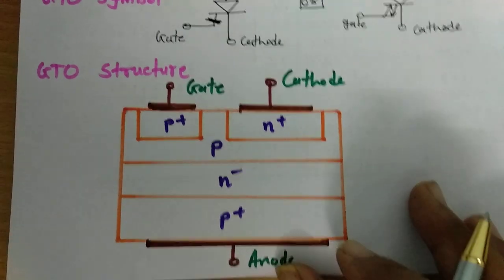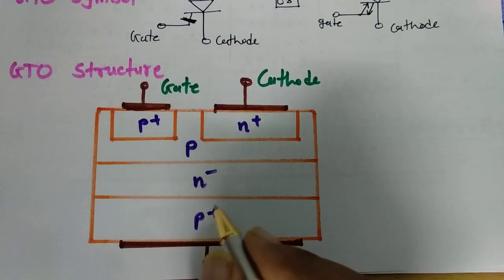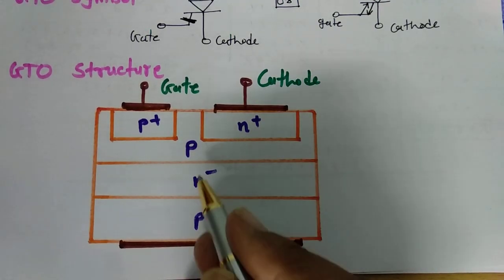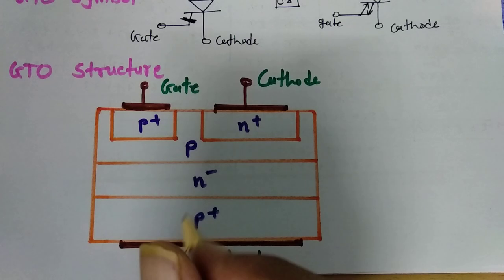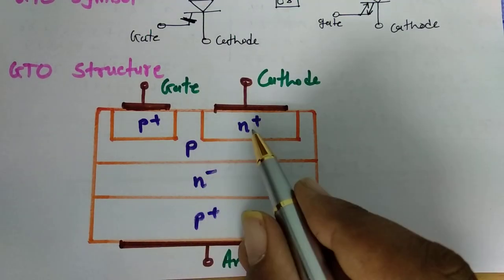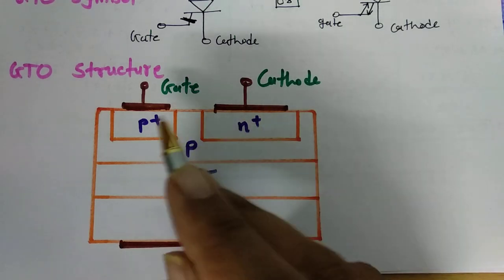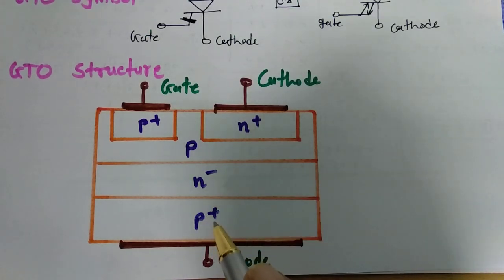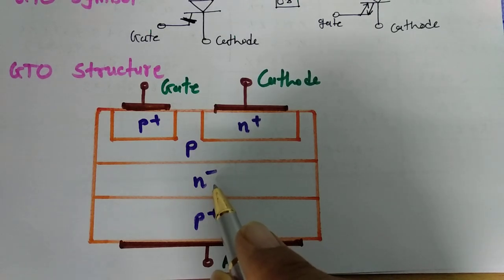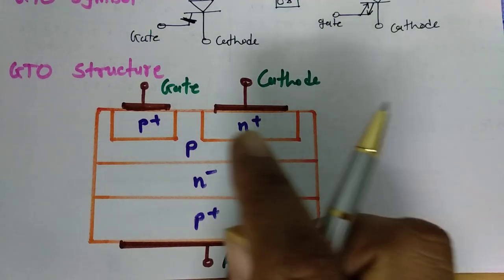Now let us move on to the structure of GTO. It is a PNPN device where anode is connected with P and cathode is connected with N. The basic difference between GTO and SCR is that in SCR we have only PNPN material, but in GTO we have P+, N−, P, N+, and at the gate side a P+ region. P+ means highly doped P-type material and N− means lightly doped N-type material. The structure is almost similar to SCR, only the doping concentration is changed.